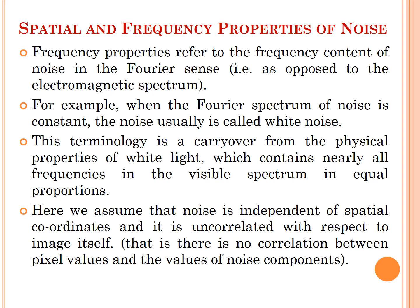Spatial and frequency properties of noise: Frequency properties refer to the frequency content of noise in Fourier sense, as opposed to the electromagnetic spectrum. For example, when the Fourier spectrum of noise is constant, the noise usually is called white noise. This terminology is carried from the physical properties of white light, which contains nearly all frequencies in the visible spectrum in proportions. Here, we assume that noise is independent of spatial coordinates and it is uncorrelated with respect to the image itself. That is, there is no correlation between pixel values and the values of noise components.